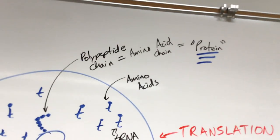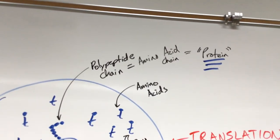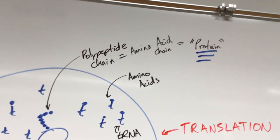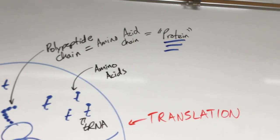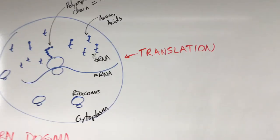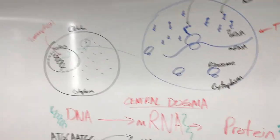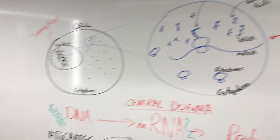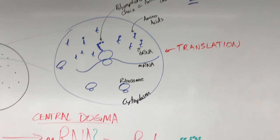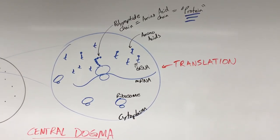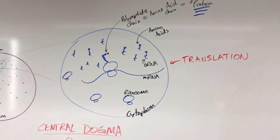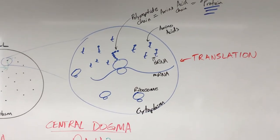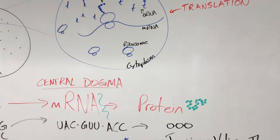When those all get put together, we've got what's called a polypeptide chain, otherwise known as amino acid chain, otherwise known as a protein. And that's the translation side. So that's the whole central dogma, starting from the DNA molecule in the nucleus and ending up in the cytoplasm with the ribosome, messenger RNA, tRNA, amino acids, all working together to make our proteins.